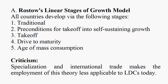First, there is Walt Rostow's linear stages of growth model. Rostow looked historically at how countries grew, and he said all countries developed via the following stages: a traditional stage, preconditions for takeoff into self-sustaining growth, stage three is the takeoff stage, stage four is the drive to maturity, and stage five is the age of mass consumption.